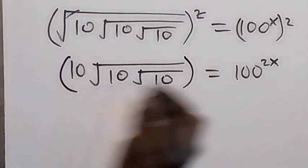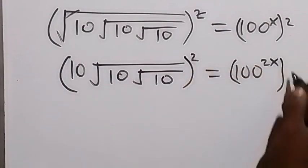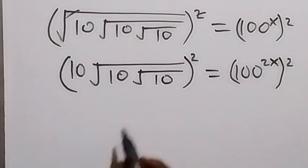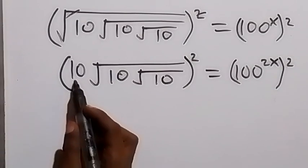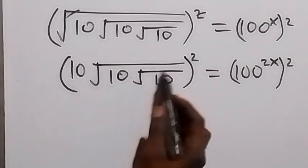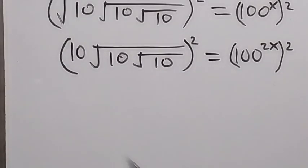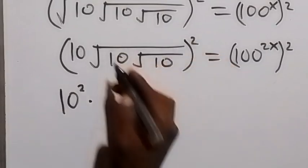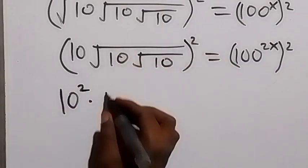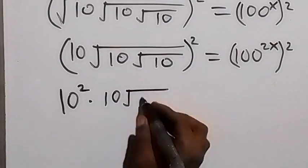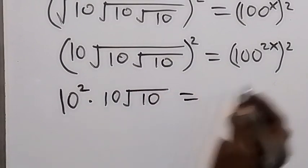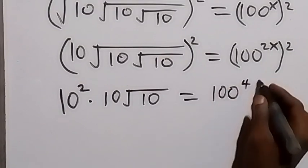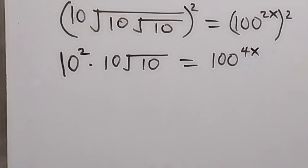We square this side and also square this side. When we square the left-hand side, this square will affect 10 and it will affect root 10, root 10. So we have 10 squared, then multiply — we cancel the square root — that's multiply by 10, then root 10, equals 100 raised to power 4x.